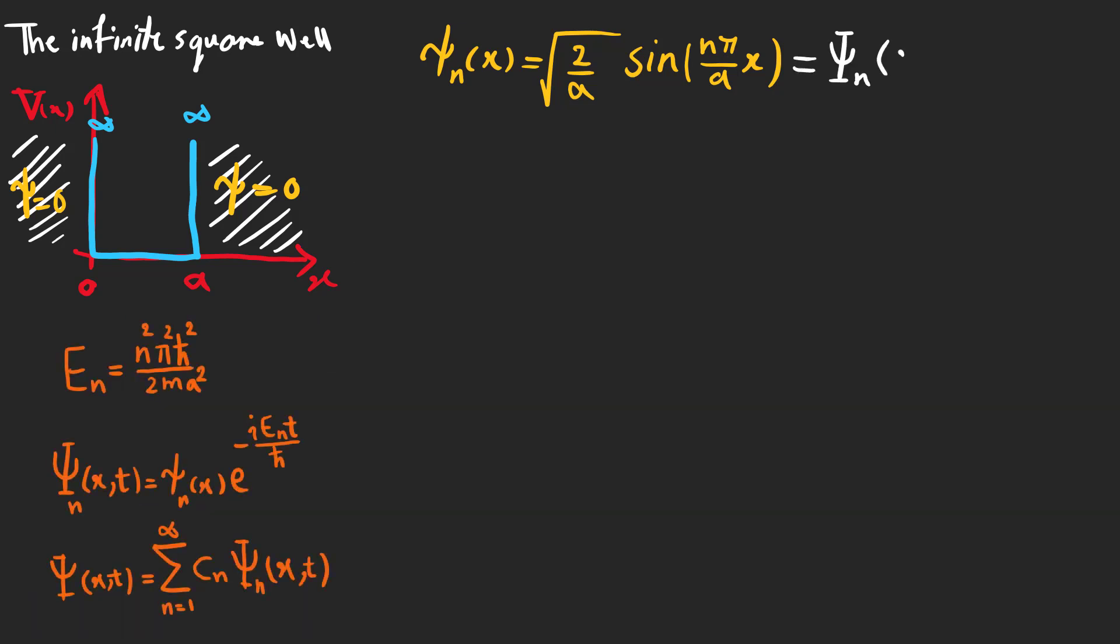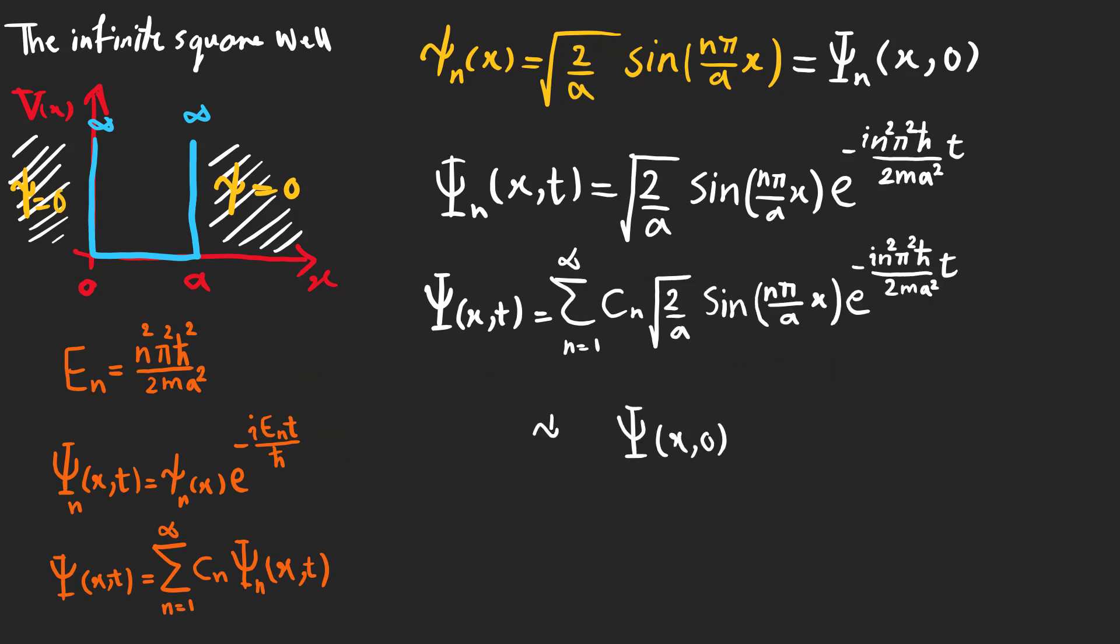Based on what we already know, we now can find the general solution. And for the coefficients, all we need to do is multiply psi(x,0) by psi_n conjugate and integrate with respect to x, which yields c_n.